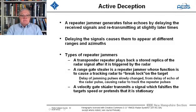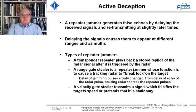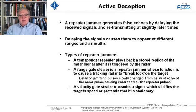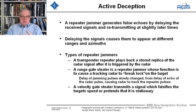There are active deception techniques. You can have what's known as a repeater jammer, which generates false echoes by delaying the received signals and sending them back at a later time. Delaying the signals causes them to appear at different ranges and azimuths. A transponder repeater stores a replica of the radar signal after it's triggered by the radar hitting the jammer, and can send back signals at any time.